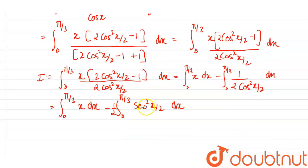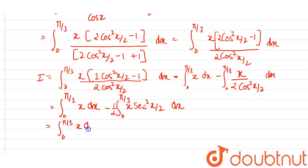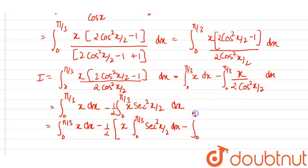1/cos²(x/2) can be rewritten as sec²(x/2) dx. To solve this integral of x·sec²(x/2), we use integration by parts. Taking first function as x, we integrate the second function which is sec²(x/2) dx, minus the integral from 0 to π/3 of the differentiation of the first function times the integration of the second function, sec²(x/2) dx.